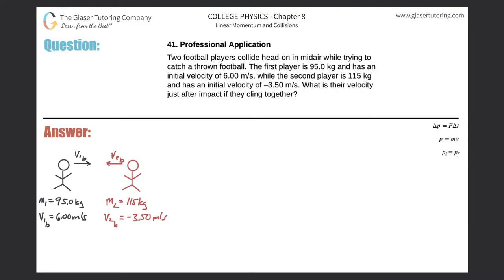Number 41, professional application. Two football players collide head-on in midair while trying to catch a thrown football. The first player is 95 kilograms and has an initial velocity of 6 meters per second, while the second player is 115 kilograms and has an initial velocity of negative 3.5 meters per second. What is their velocity just after impact if they cling together?